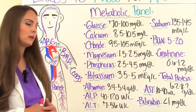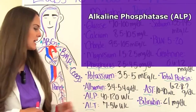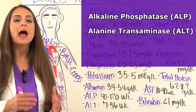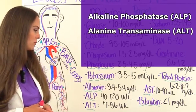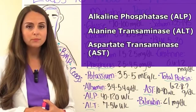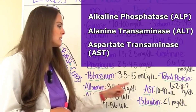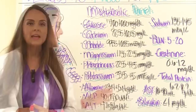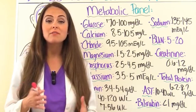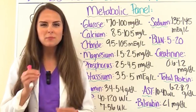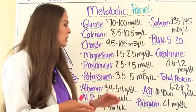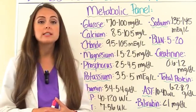A normal ALP (alkaline phosphatase) is 40 to 120 units per liter. ALT (alanine transaminase) normal range is 7 to 56 units per liter. AST (aspartate transaminase) normal is 10 to 40 units per liter. The last part of the metabolic panel is bilirubin, a substance created when red blood cells break down. A normal bilirubin level should be less than 1 mg/dL.